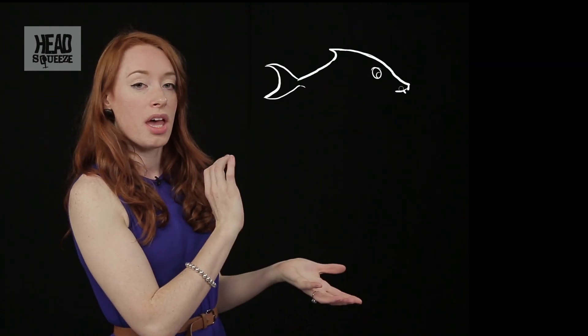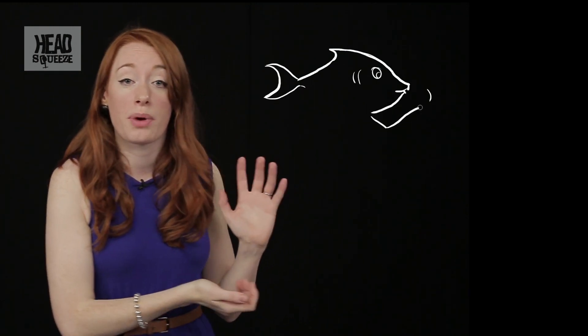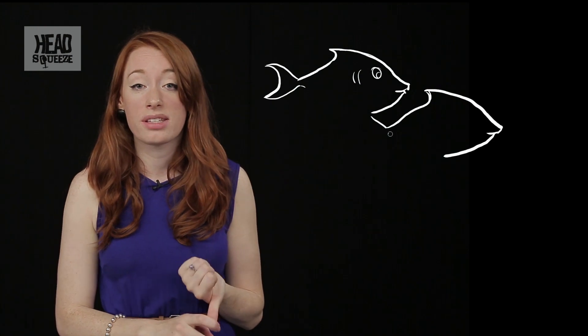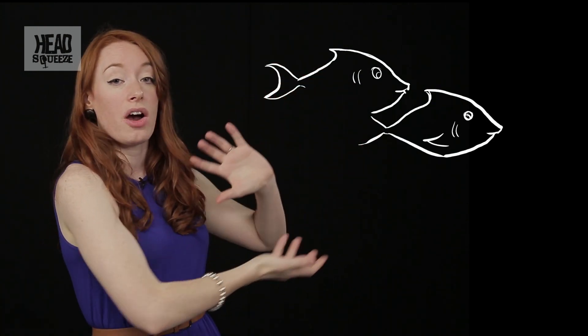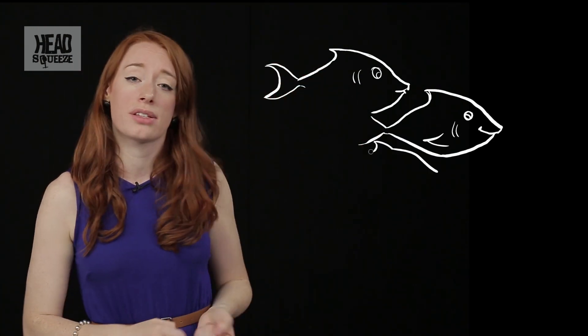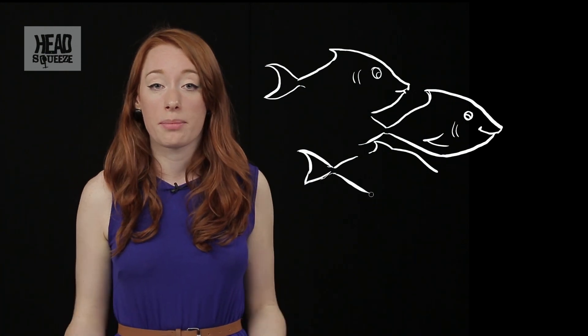Now if you imagine a school of fish, there are several evolutionary examples as to why this is an effective way to avoid a predator. So it confuses the predator, the school has many eyes so you can see a predator coming from more directions and of course there's safety in numbers.